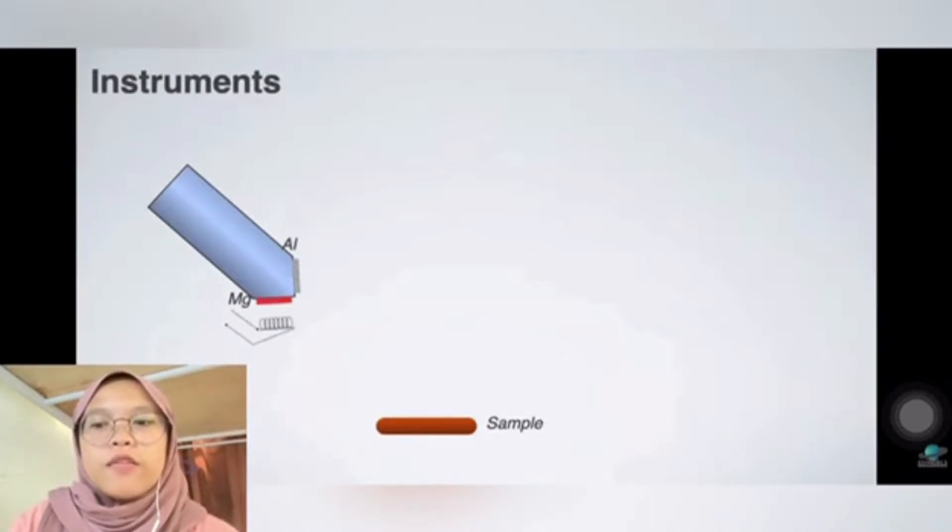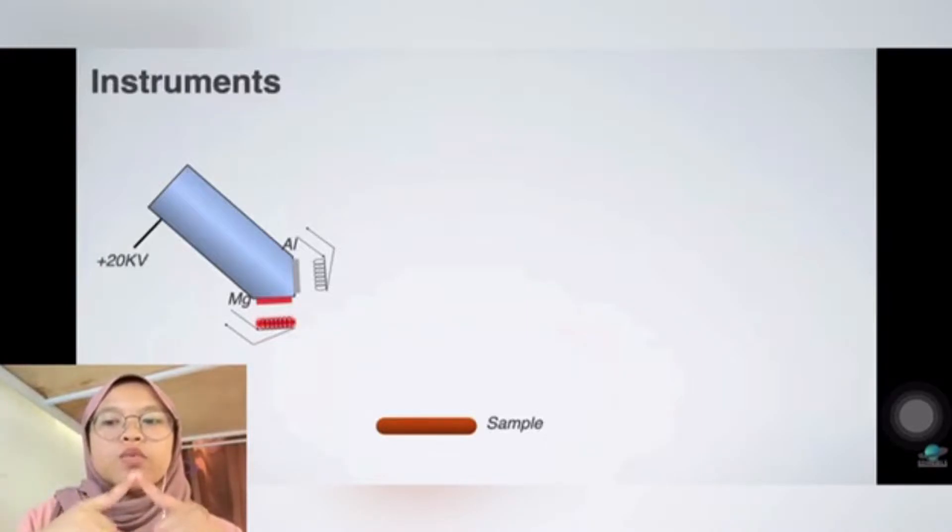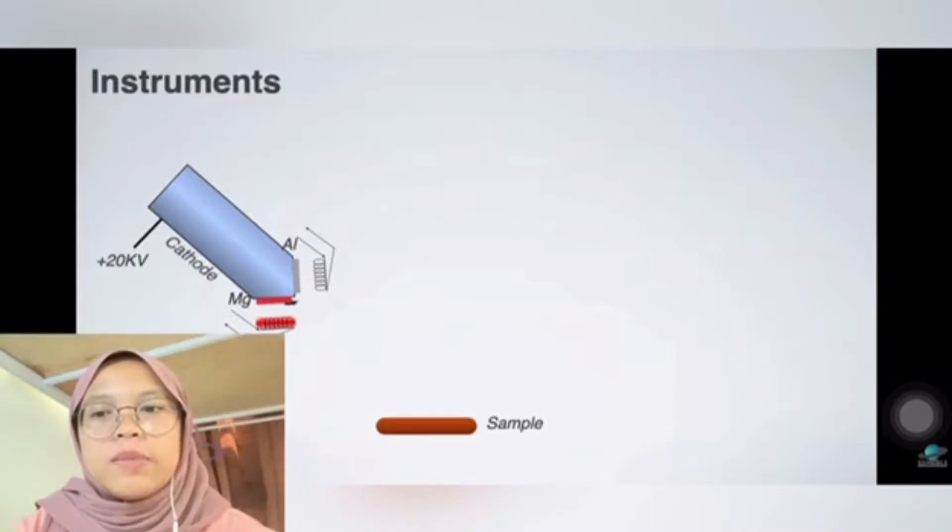There are two types of X-ray sources that are very common which are magnesium K-alpha and aluminum K-alpha. Only one source can emit both radiations, which is the X-ray source that is made of a metal tube. At the end of the tip, it has two surfaces which, one side is coated with magnesium and another side is coated with aluminum.